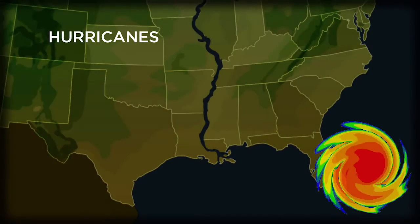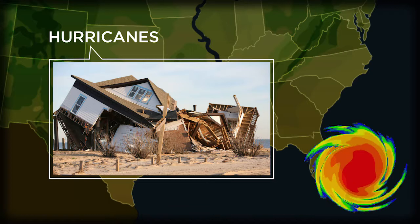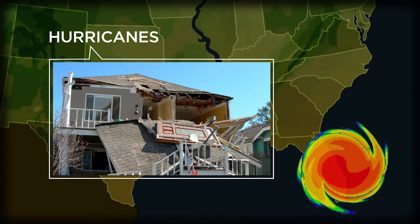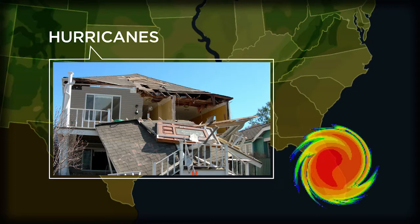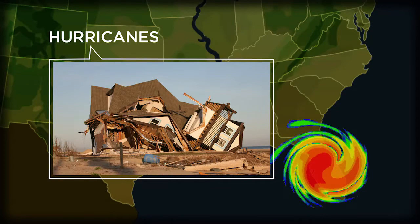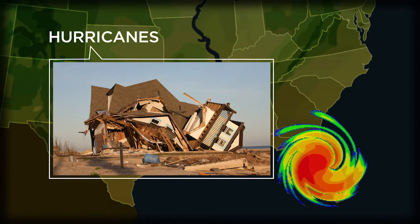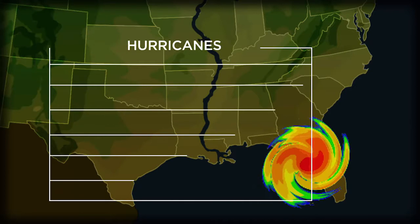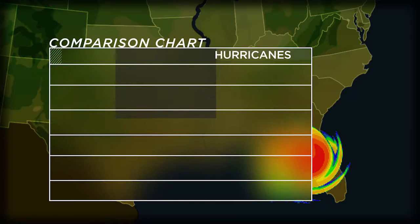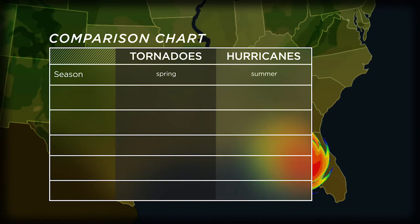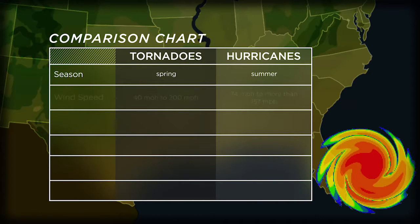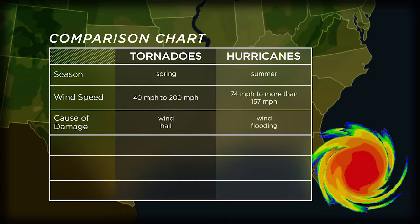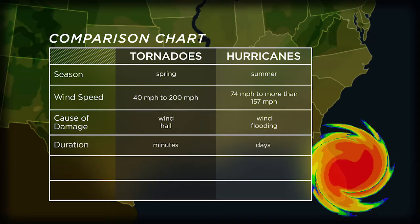Hurricanes are a second example of severe weather. Like a tornado, these storms are characterized by rapidly spinning winds that form as warm air rises. In spite of how similar the storms may seem, they are really quite different, starting with the time of year in which they usually occur. Summertime begins hurricane season, although the peak occurs in late summer or early fall.